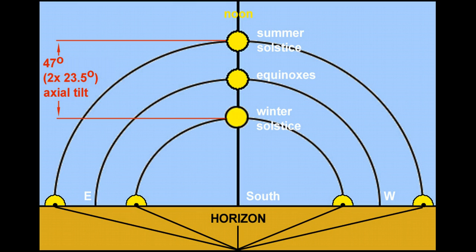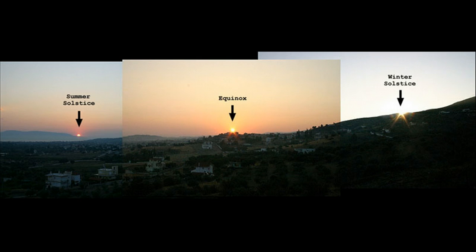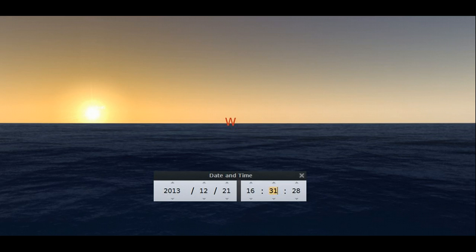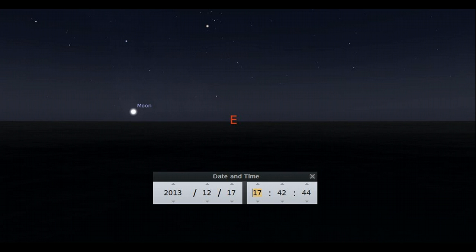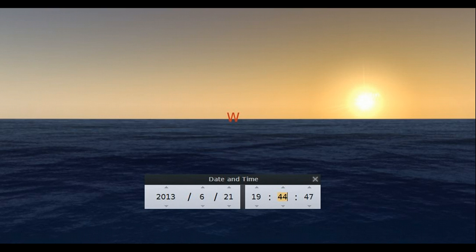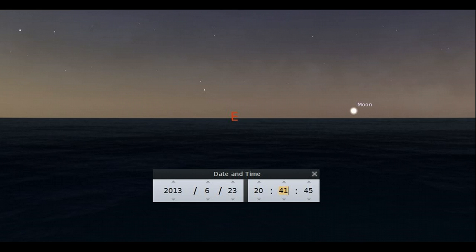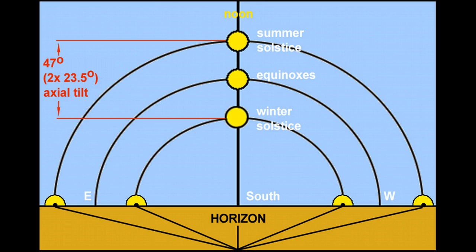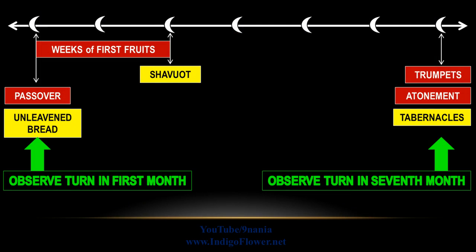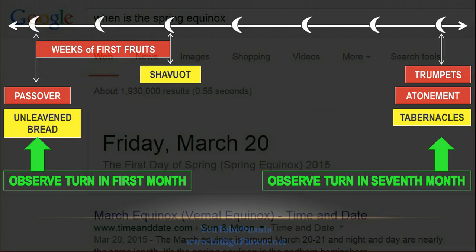In modern times we know the exact date that turn occurs — we call it the equinox. But in ancient times they didn't have that technology, so they had to physically observe the sun and moon. In the northern hemisphere in winter, the sun sets to the left of due west and the moon rises to the left of due east. In summer, the sun sets to the right of due west and the moon rises to the right of due east. The turn is when the setting and rising of the moon moves from the left to the right — that's the equinox.